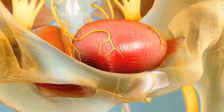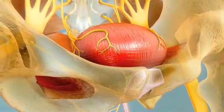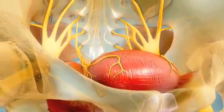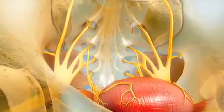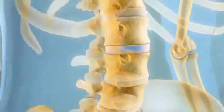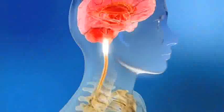During bladder filling, sensory or afferent signals convey information on bladder fullness, in part via the sacral nerves. The signal travels up the spinal cord to the brain.